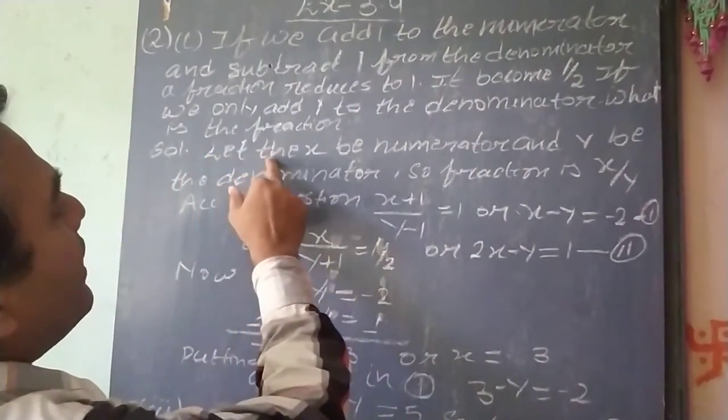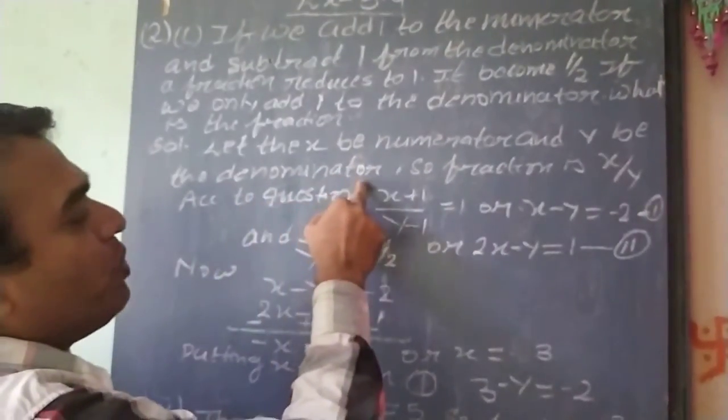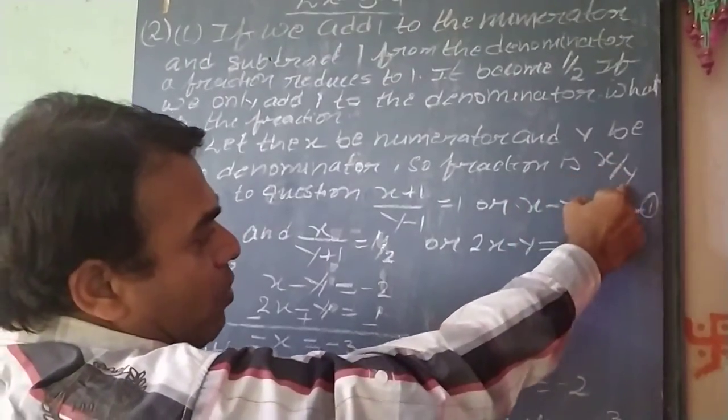Solution: let the x be the numerator and y be the denominator. So the fraction is x by y.